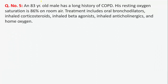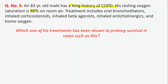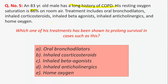Question 5: an 83-year-old male has a long history of COPD. His resting oxygen saturation is 86% on room air. Treatment includes oral bronchodilator, inhaled corticosteroids, inhaled beta agonist, inhaled anticholinergics, and home oxygen. Which one of his treatments has been shown to prolong survival? The answer is home oxygen. Treatment of hypoxemia is critical in COPD management, and studies show reduction in mortality with oxygen use for 15 or more hours daily.